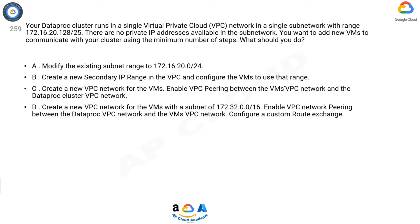C: Create a new VPC network for the VMs, enable VPC peering between the VM's VPC network and the DataProc cluster VPC network. D: Create a new VPC network for the VMs with a subnet of 172.32.0.0/16, enable VPC network peering between the DataProc VPC network and the VMs VPC network, and configure a custom route exchange.